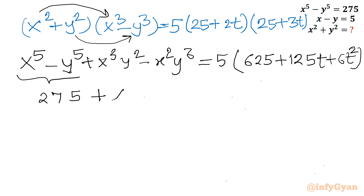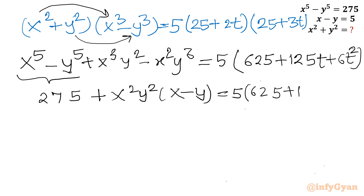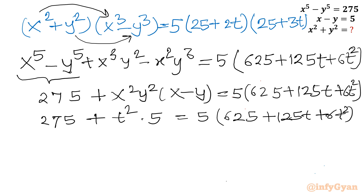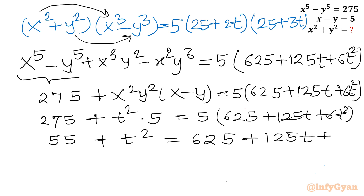Now taking x squared y squared common from the cross terms on the left, we have x squared y squared times (x minus y). Since x minus y equals 5, we get 275 plus t squared times 5 on the left side equals 5 times (625 plus 125t plus 6t squared). Dividing through by 5 gives 55 plus t squared equals 625 plus 125t plus 6t squared.